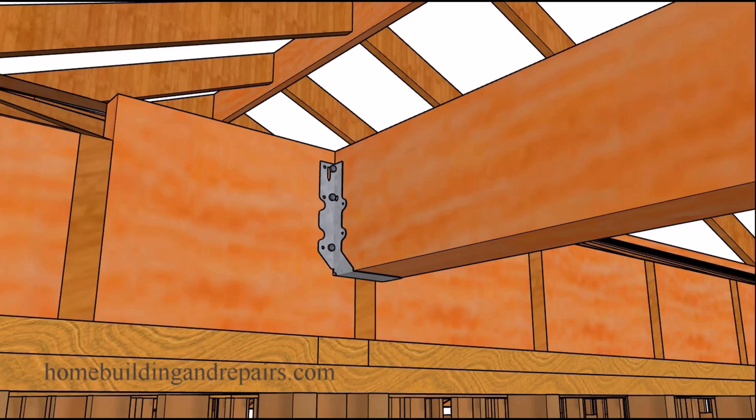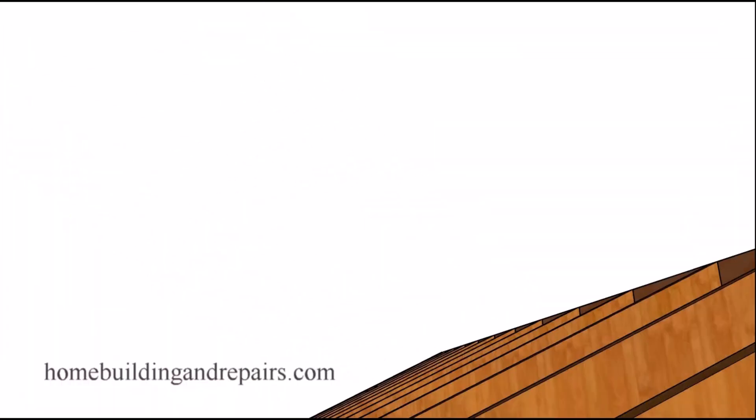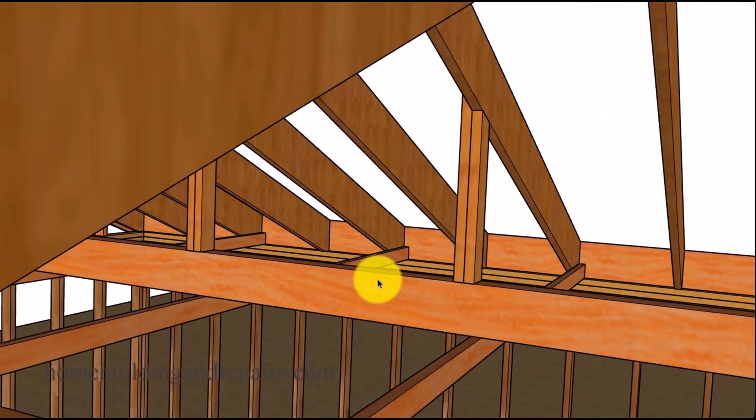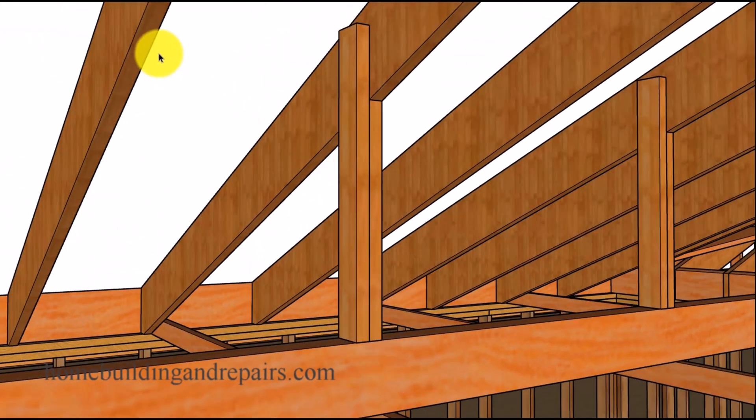If you use a large enough beam for your strong back, and this might not be referred to as a strong back anymore it might be a structural beam, then you could always use it to support the roof if you're having problems with the roof rafter sagging.